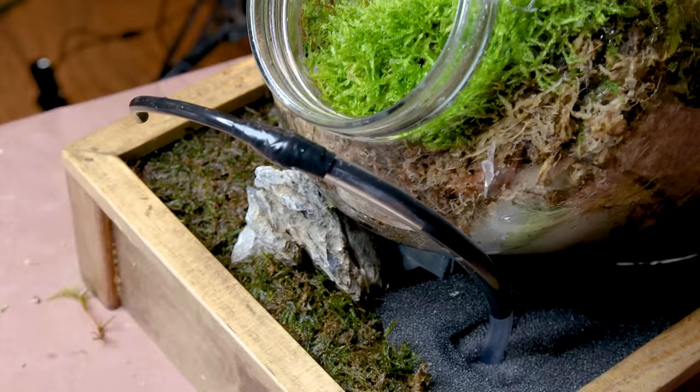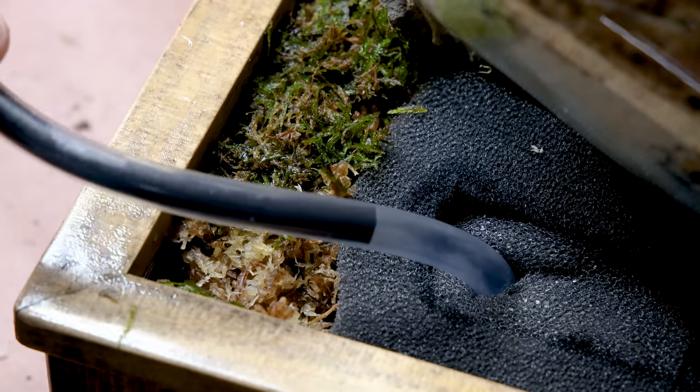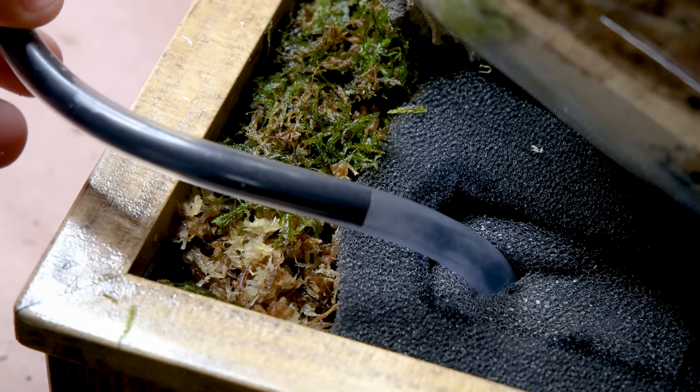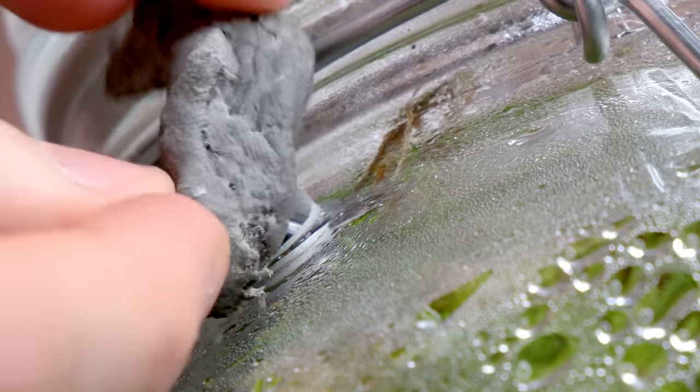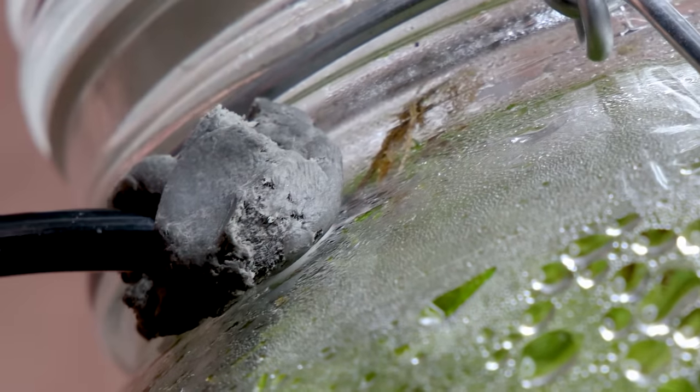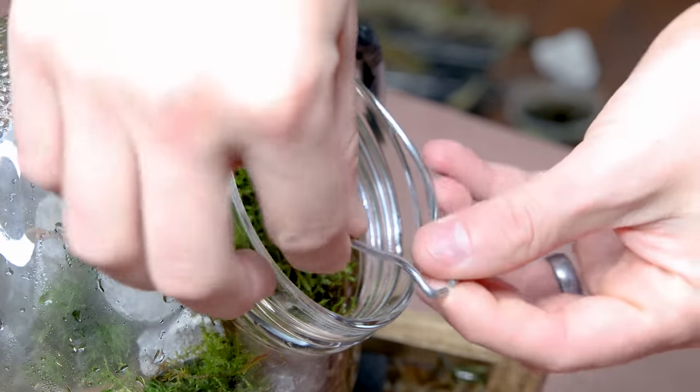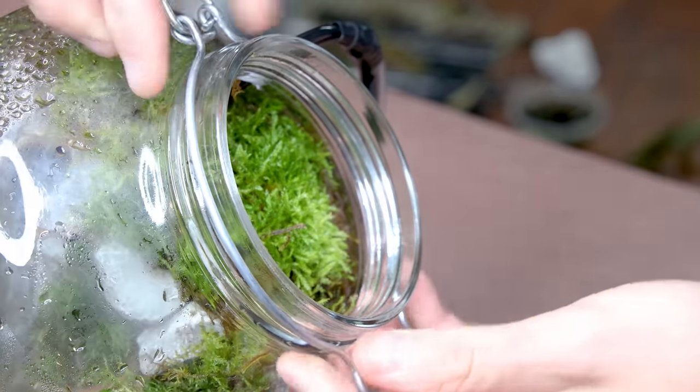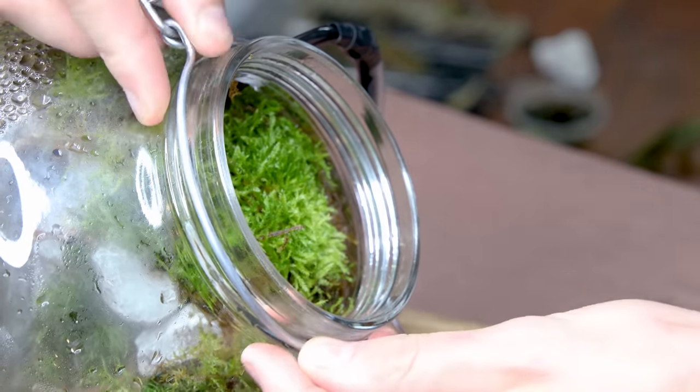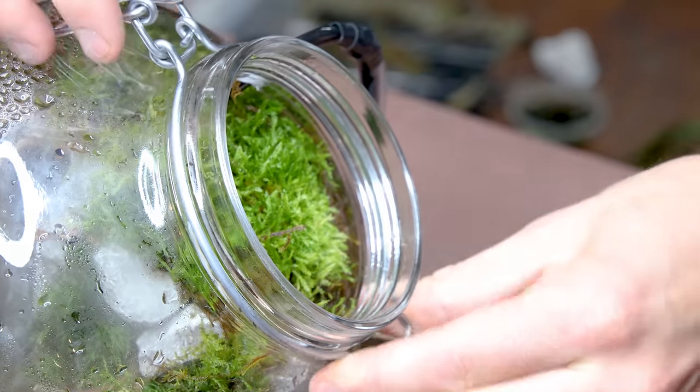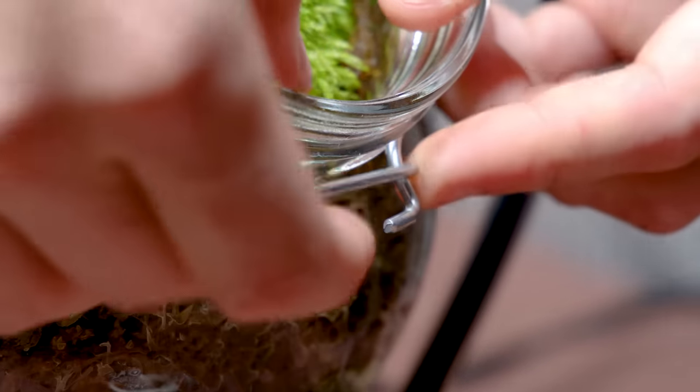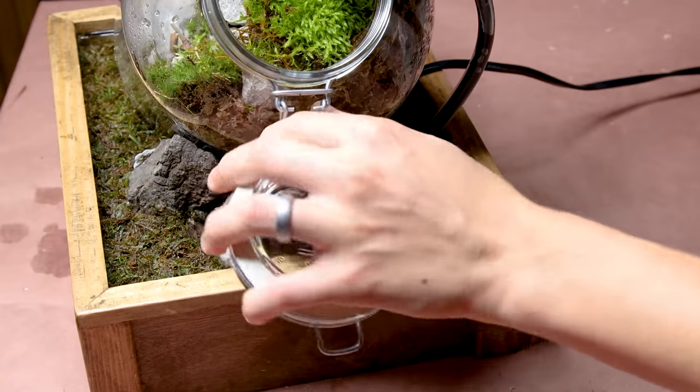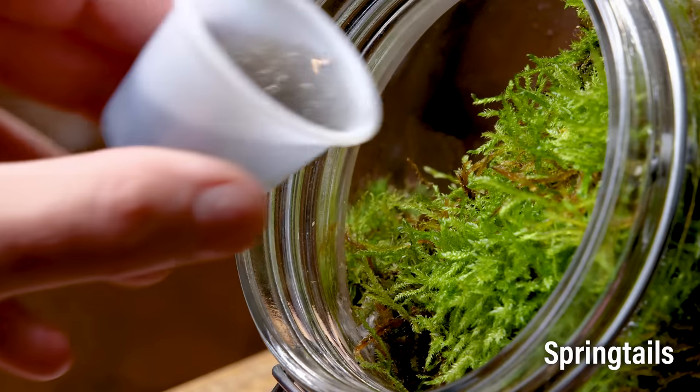The pump's tube is composed of an airline, inserted into a larger vinyl tube. I taped the two together. I also sealed off the gap in the back with duct seal putty. From there, I reinstalled the lid. The last thing I did was add springtails. As always, these will help keep the system clean and mold free.